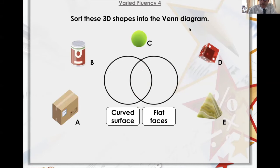Sort these 3D shapes into the Venn diagram. This side is curved surfaces, this one is flat surfaces, and this one has both curved and flat. So, well, there's no curves in A, so A goes over here. B is curved and it's flat, so it goes in the middle. A sphere is all curved, so it goes here by itself.